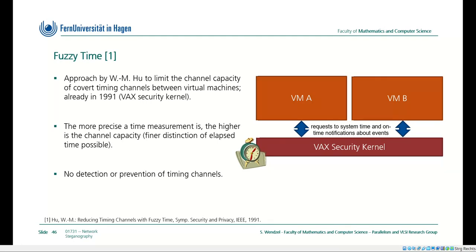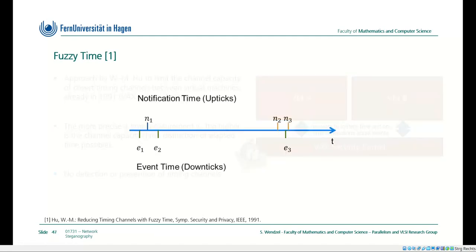This approach is called fuzzy time, published at the Symposium on Security and Privacy — one of the two most competitive security conferences. It works by distinguishing between notification time and event time. The event time, or down-tick, is when an event actually occurs — for instance, an interrupt in the VAX security kernel. However, instead of passing the event directly to the virtual machine for immediate notification, there is a short randomized delay. The notification time always corresponds to an indexed event time, with varying time deltas — small for some events, large for others.